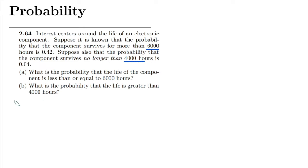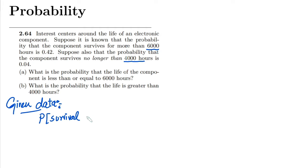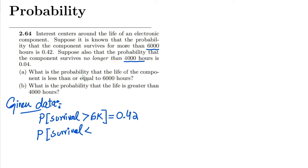Let me write the given data. The probability of survival for more than 6000 hours is 0.42, so P(X > 6000) = 0.42. Similarly, the probability that the component survives no longer than 4000 hours is 0.04, so P(X ≤ 4000) = 0.04. These are the two conditions given in this question.